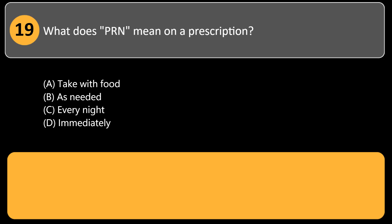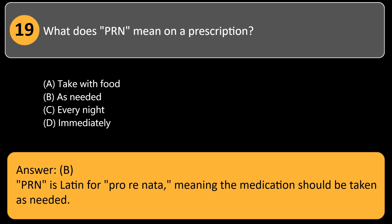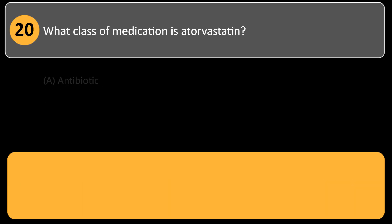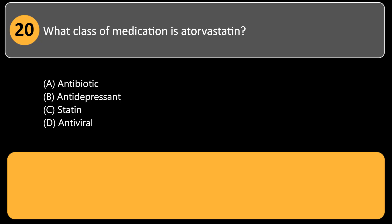What does PRN mean on a prescription? A) take with food, B) as needed, C) every night, D) immediately. Answer: B. PRN is Latin for 'pro re nata,' meaning the medication should be taken as needed.